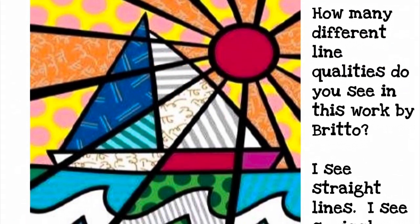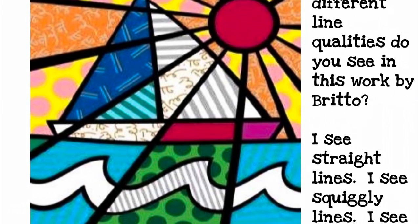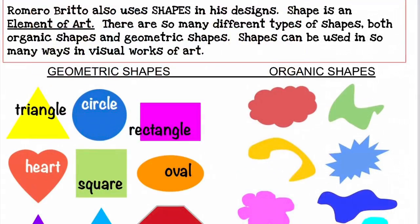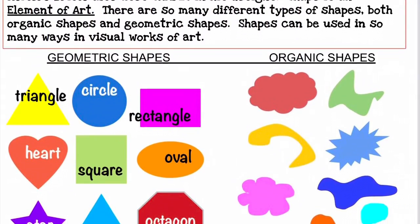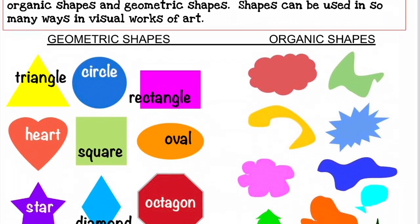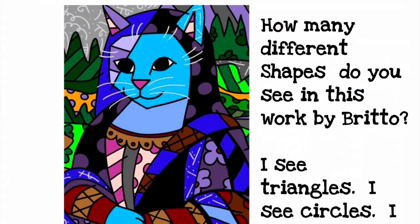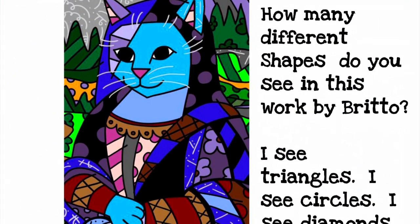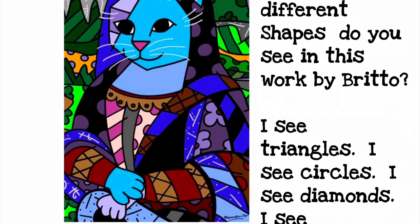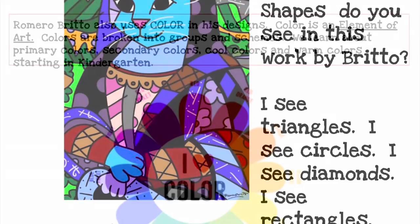How many different line qualities do you see in this work by Britto? I see some straight lines, some squiggly lines, and some wavy lines. Romero Britto also uses shapes in his designs — both geometric shapes, which we've discussed a lot in class, and organic shapes. How many different shapes do you see? I see some triangles and circles, some diamond shapes, some flower shapes, and rectangles.